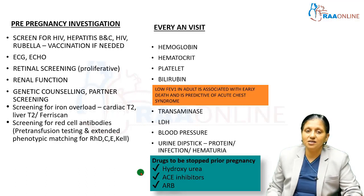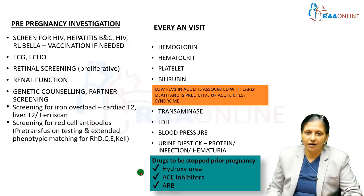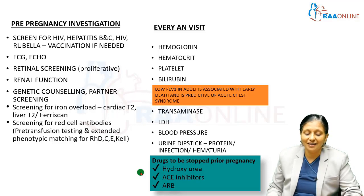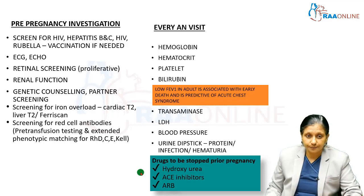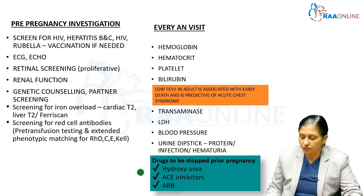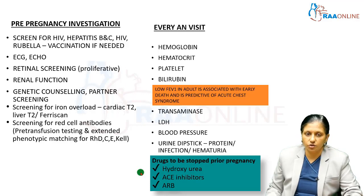Retinal screening should be done, as hypoxia can cause proliferative retinopathy identifiable on fundoscopy before pregnancy. Renal function tests, genetic counseling about the hereditary nature of the defect, partner screening, and screening for iron overload — especially in patients who have received multiple blood transfusions — are all required.